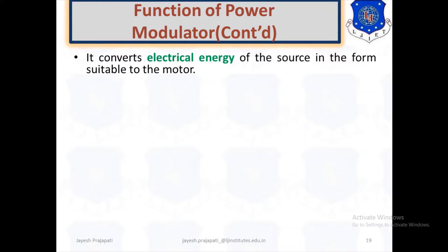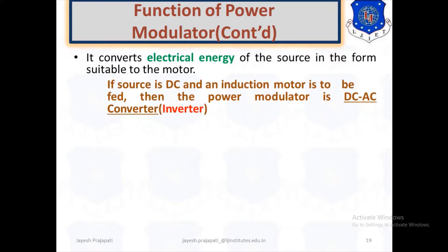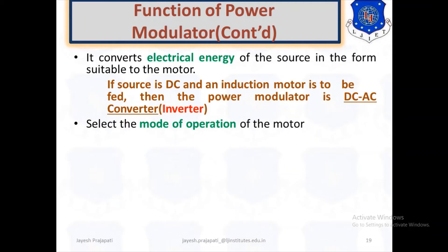The power modulator converts the electrical energy of the source into the form suitable for the motor. For example, if the source is DC and the motor is an induction motor (AC motor), the power modulator acts as a DC to AC converter, i.e., an inverter. It can also select the mode of operation of the motor, such as motoring or braking.